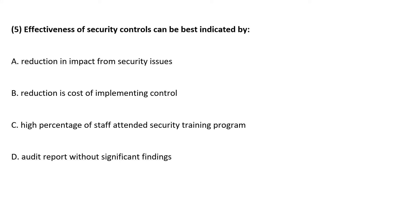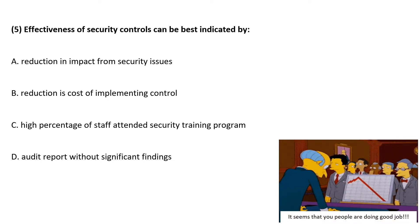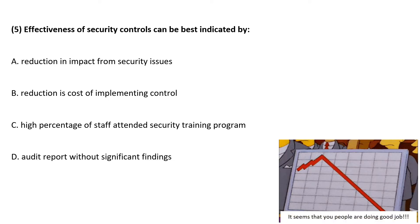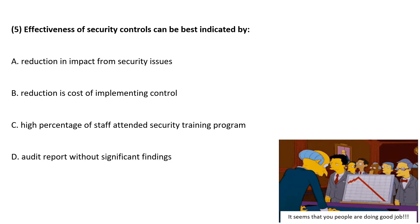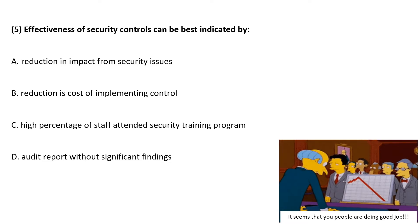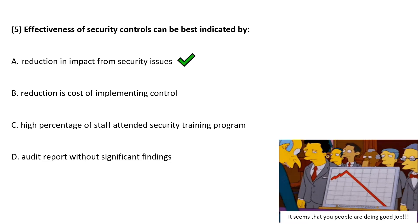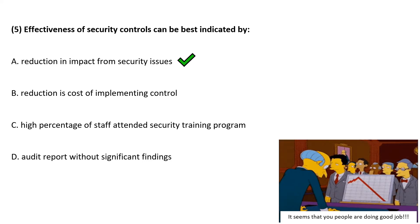Effectiveness of security controls can be best indicated by. Management is always concerned about the movement of a graph. Correct answer is whether security controls are able to reduce the impact from security issues.